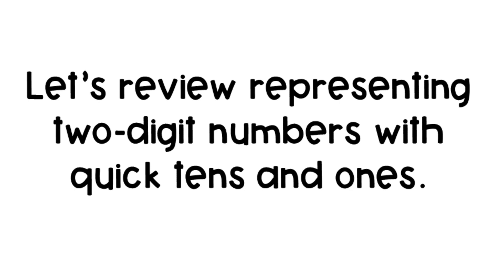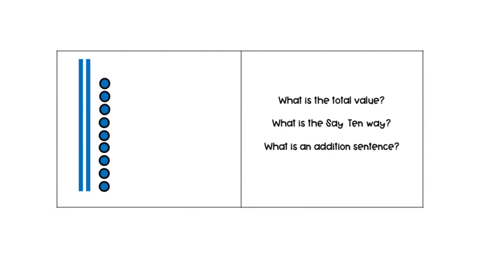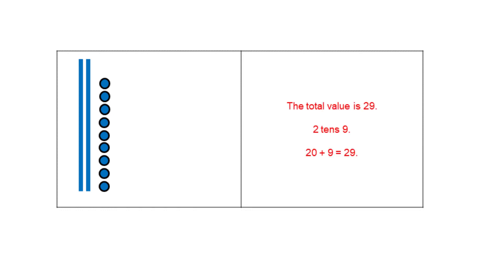Let's review what we just learned about representing two-digit numbers with quick tens and ones. Remember, the long bars are quick tens and the dots are ones. What is the total value of this picture? What is the say-ten way? What is an addition sentence for this picture? The total value is twenty-nine. The say-tens way is two tens and nine. An addition sentence for this picture is twenty plus nine equals twenty-nine.